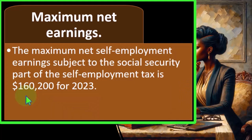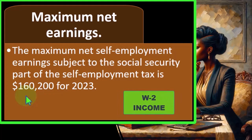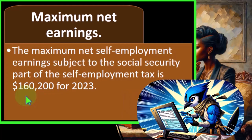If we have income that's over this threshold, and it were W-2 income, you would see it in the boxes that represent income on the W-2 — Box 1, 3, and 5 — might be different. In other words, Box 1, which is subject to federal income tax, might be higher than Box 3, which is subject to Social Security and could be capped at this amount, $160,200.